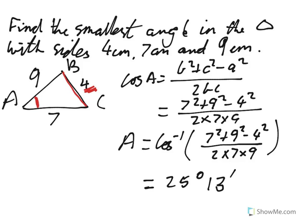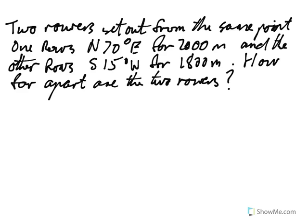Let's look at an application question. Here's our question: two rowers set out from the same point, one rows north 70 degrees to the east for 2000 meters, and the other rows south 15 degrees to the west for 1800 meters. How far apart are the two rowers? So first of all we need to draw this thing. Here's our north, south, east, and west.